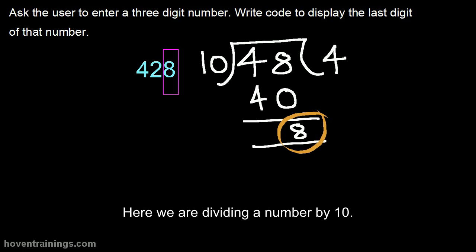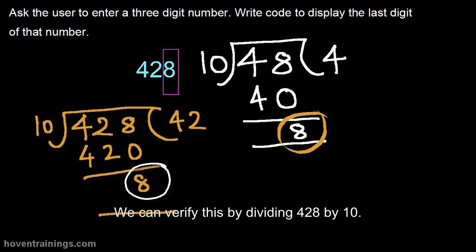Here we are dividing a number by 10. The remainder, as we can see, is 8. The last digit is the remainder. We can verify this by dividing 428 by 10. The remainder in this case also is the last digit.